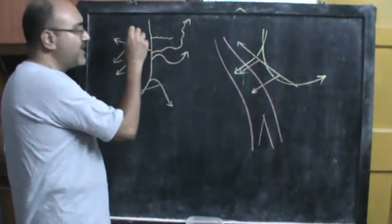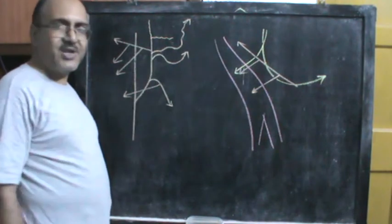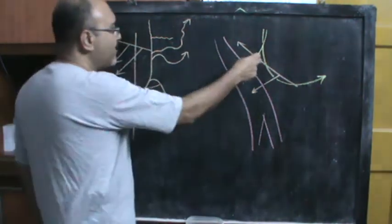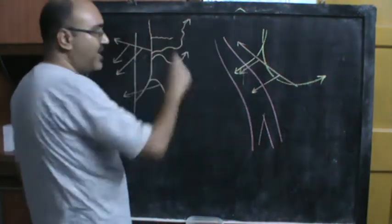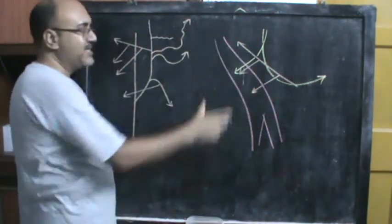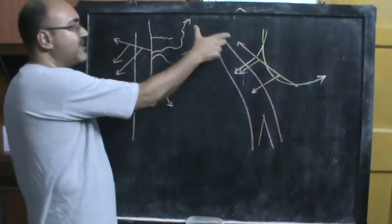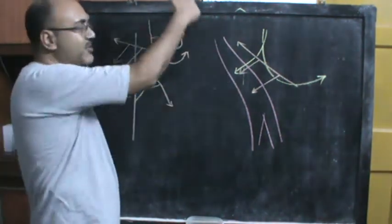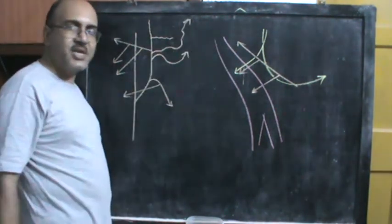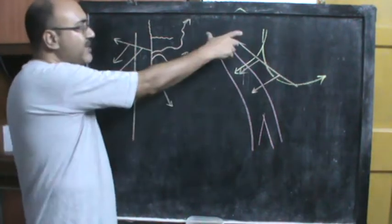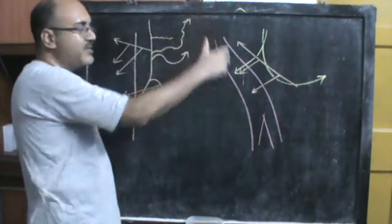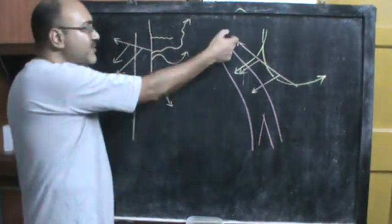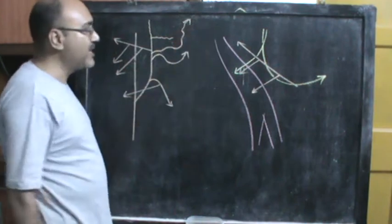Apart from the sternomastoid branches, the occipital artery gives several muscular branches as it passes through its course — through the digastric triangle, the apex of the posterior triangle, and mainly when it is going into the suboccipital region from the posterior triangle.